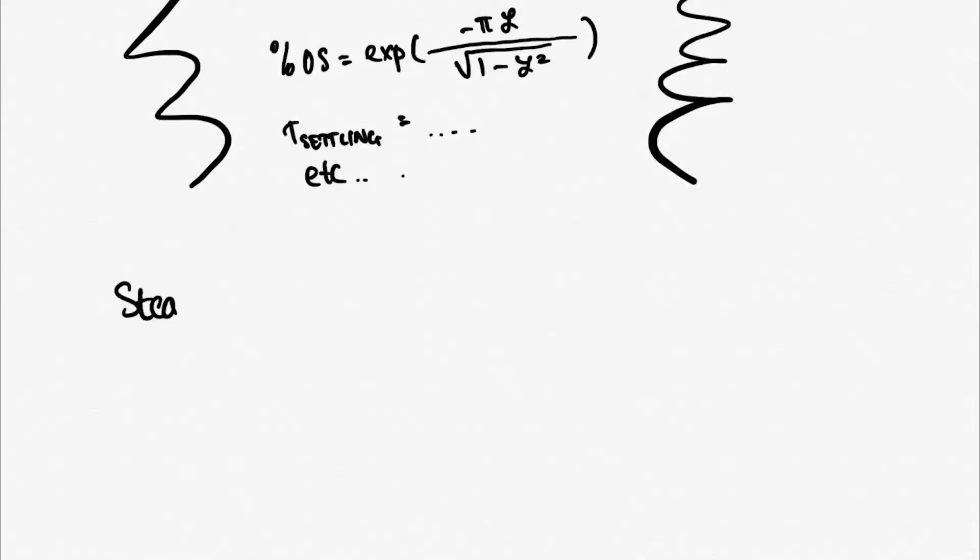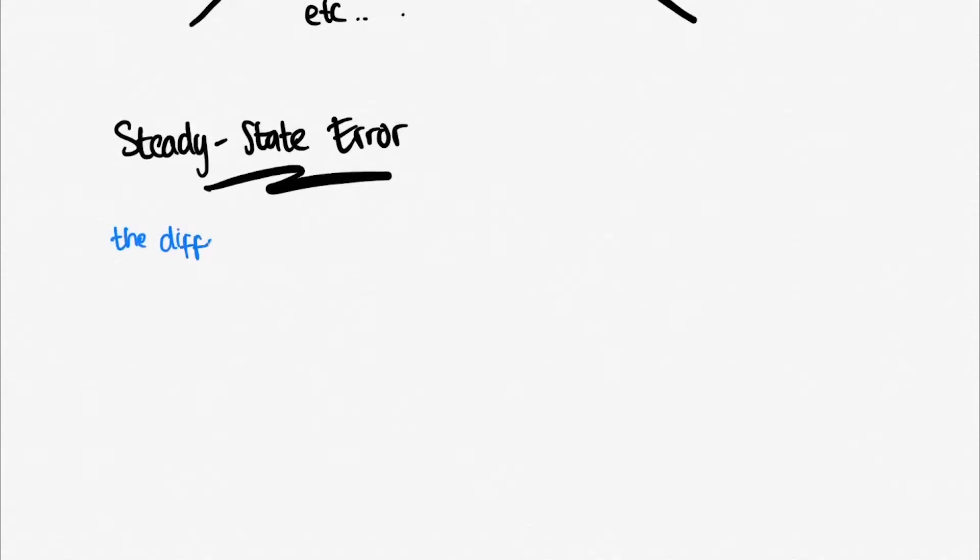Let's talk about our last measurement of performance of control systems, the steady-state error. Steady-state error is the difference between the reference input and actual output of our system for a prescribed test input as time approaches infinity.